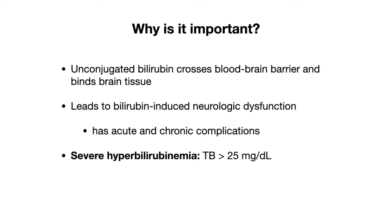Severe hyperbilirubinemia is defined as a total bilirubin of greater than 25, and this is when you start expecting neurologic symptoms to develop. But your goal is to really try to prevent the bilirubin from even reaching that level in the first place.